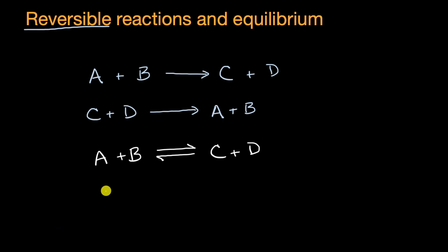What's going to happen is the reaction is going to go in both directions. So A plus B is going to react to form C plus D, and C plus D is going to react to form A plus B.